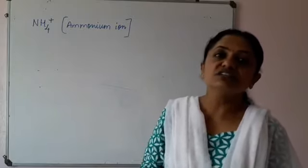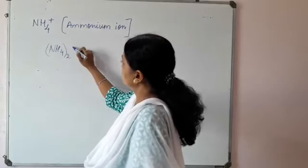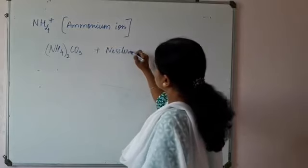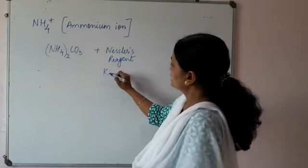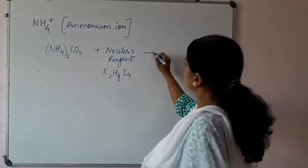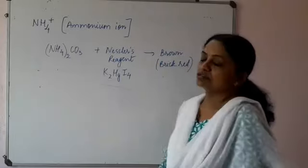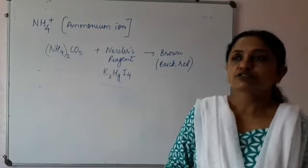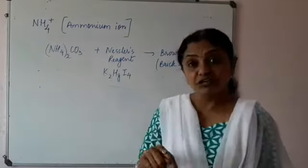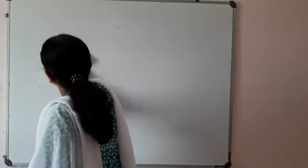To confirm that a substance contains the ammonium ion, we use Nessler's reagent. Nessler's reagent is potassium mercuric iodide, K₂HgI₄. When you add it to an ammonium compound — such as ammonium sulphate, ammonium carbonate, or ammonium chloride — it will turn brown, or brick red. Nessler's reagent is colourless and turns brown on contact. So that is how we detect the ammonium cation, completing our topic on detection of cations.